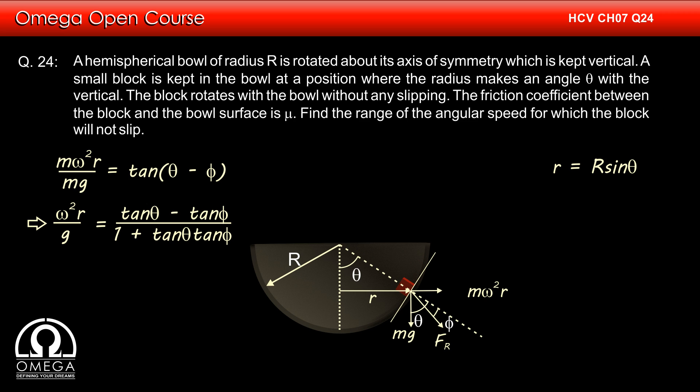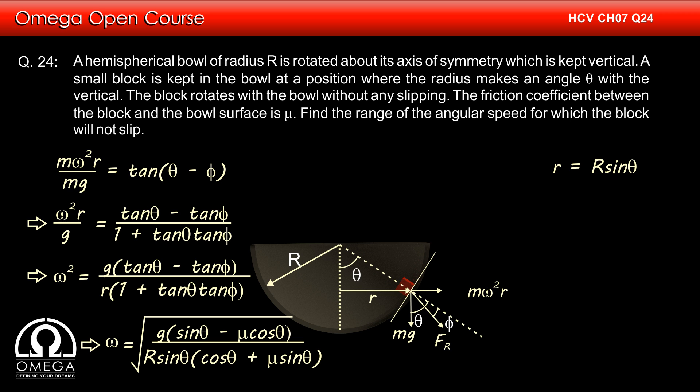This implies omega squared r by g is equal to tan theta minus tan phi divided by 1 plus tan theta tan phi, or omega squared equals g tan theta minus tan phi divided by r into 1 plus tan theta tan phi. Putting tan theta as sin theta by cos theta, tan phi as mu, and r as capital R sin theta, we get omega equals root under g(sin theta minus mu cos theta) divided by capital R sin theta into (cos theta plus mu sin theta). This is the minimum angular speed of the ball below which the block will start sliding down.